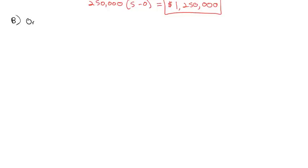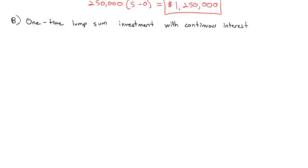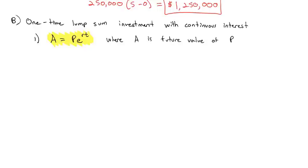Next we'll talk about a one-time lump sum investment with continuous interest. This one's not actually a calculus equation — you probably saw it in pre-calc and maybe even in algebra. The function for a one-time lump sum with continuous interest is A = Pe^(rt), where A is the future value of P invested at rate r for time T.